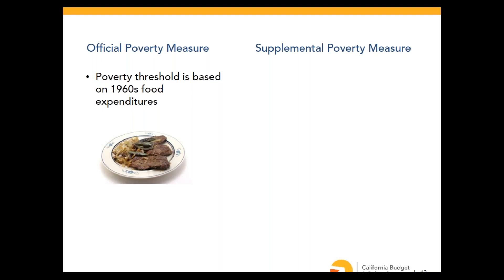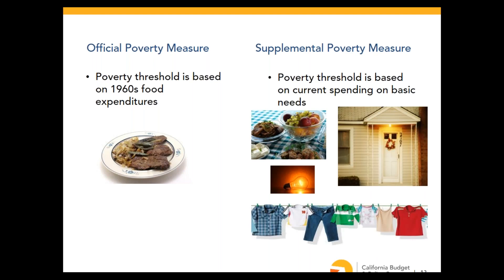The supplemental thresholds, on the other hand, are based on a more comprehensive range of basic needs — including food, clothing, housing, and utilities — and they're updated each year to adjust with changes in family spending patterns.